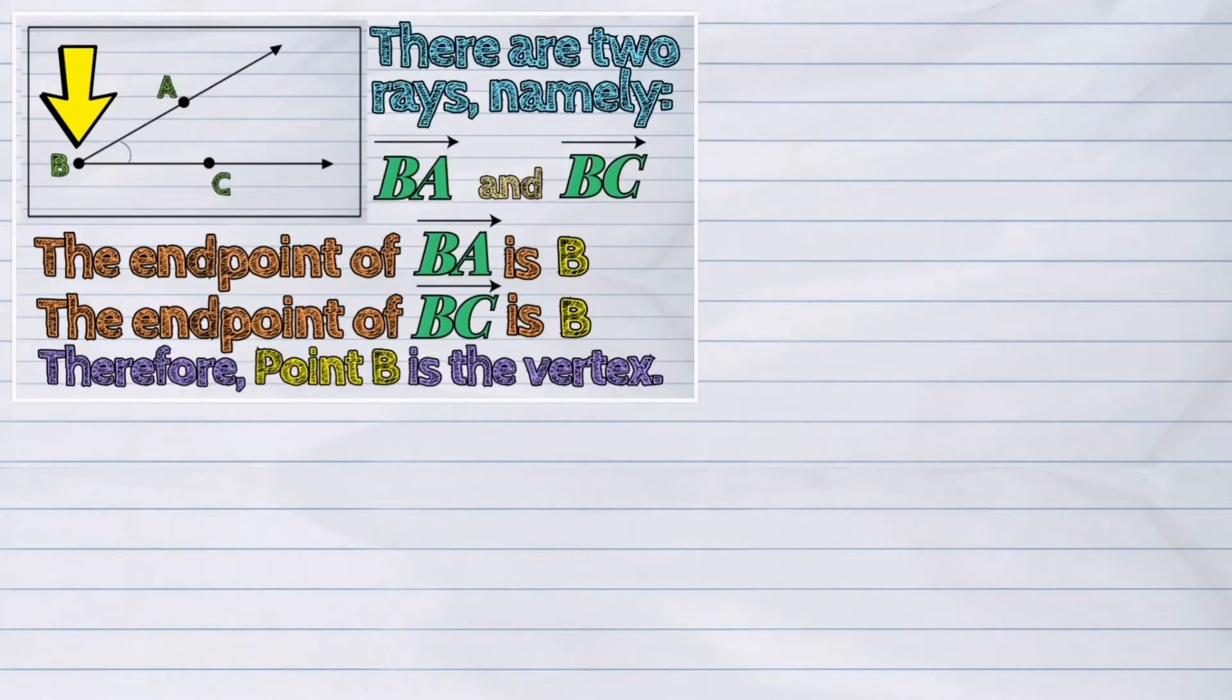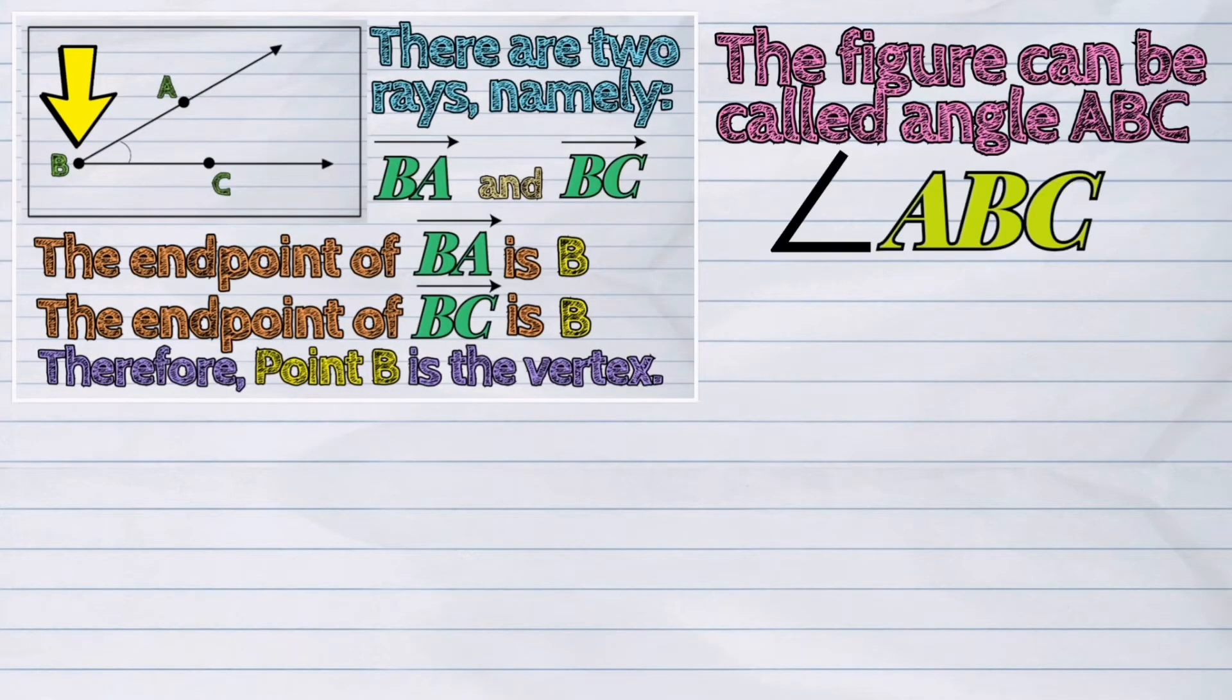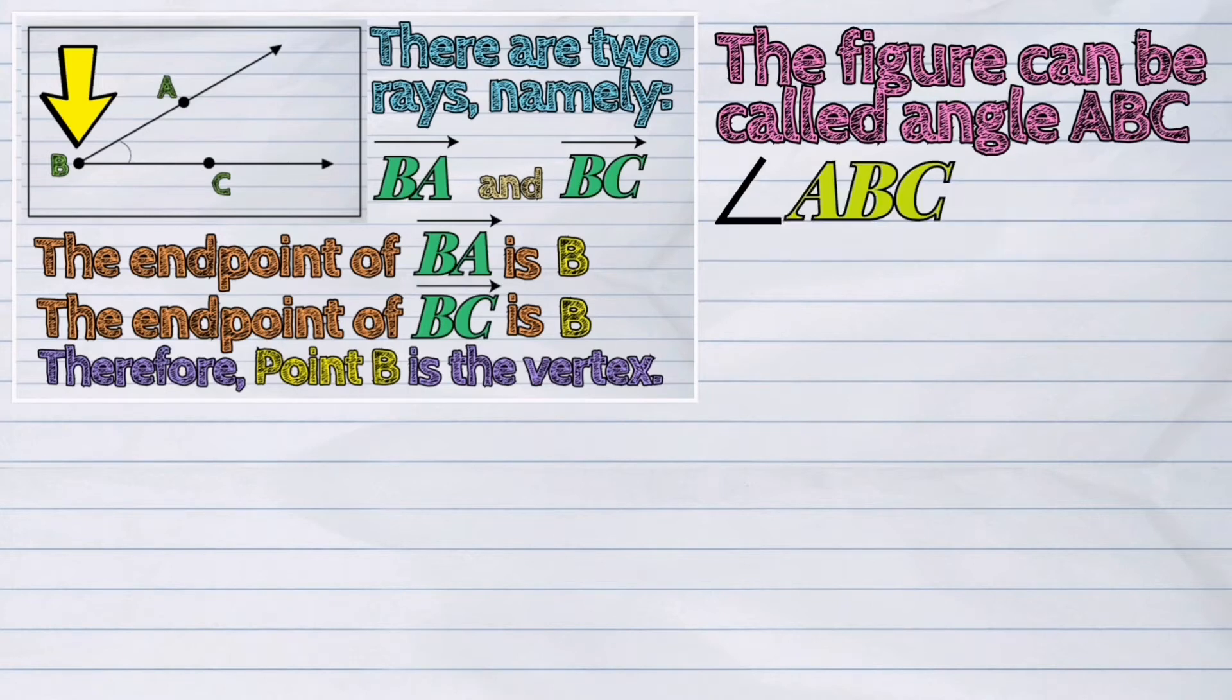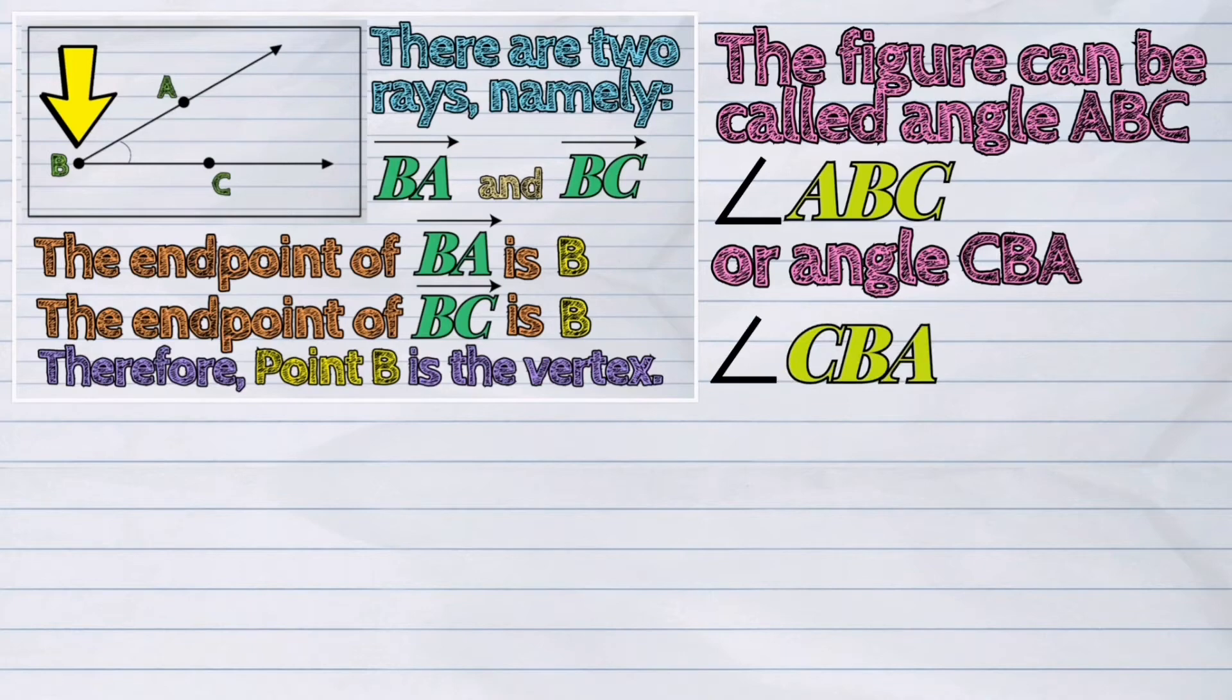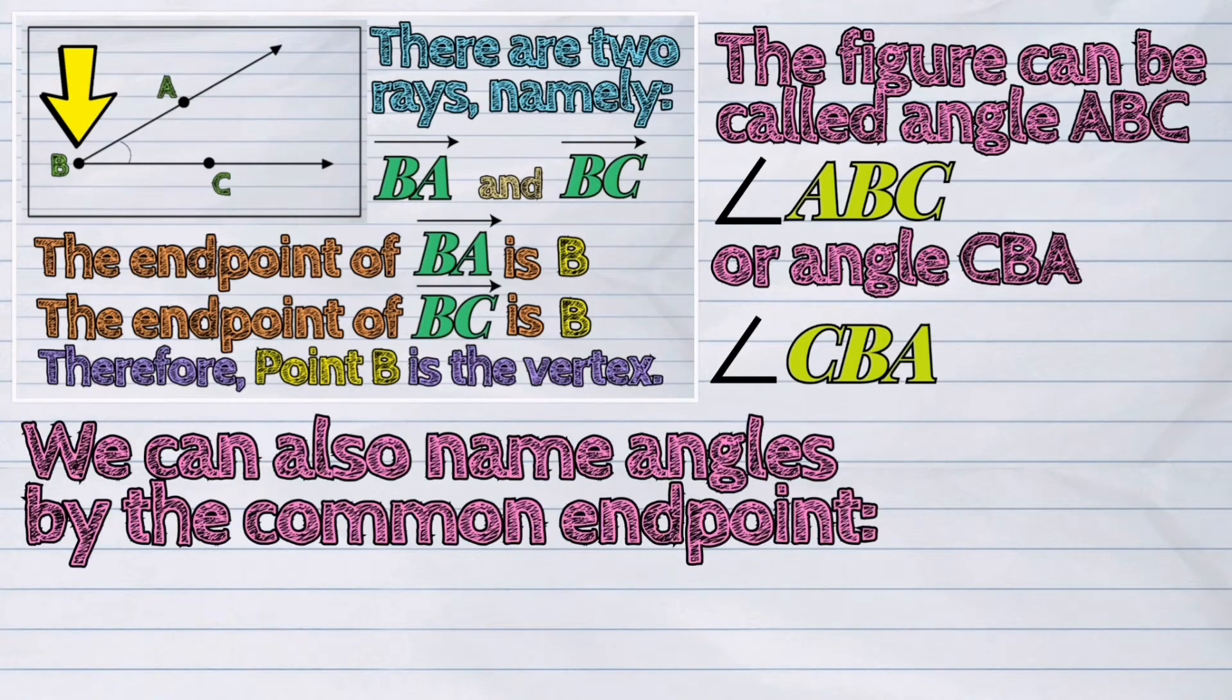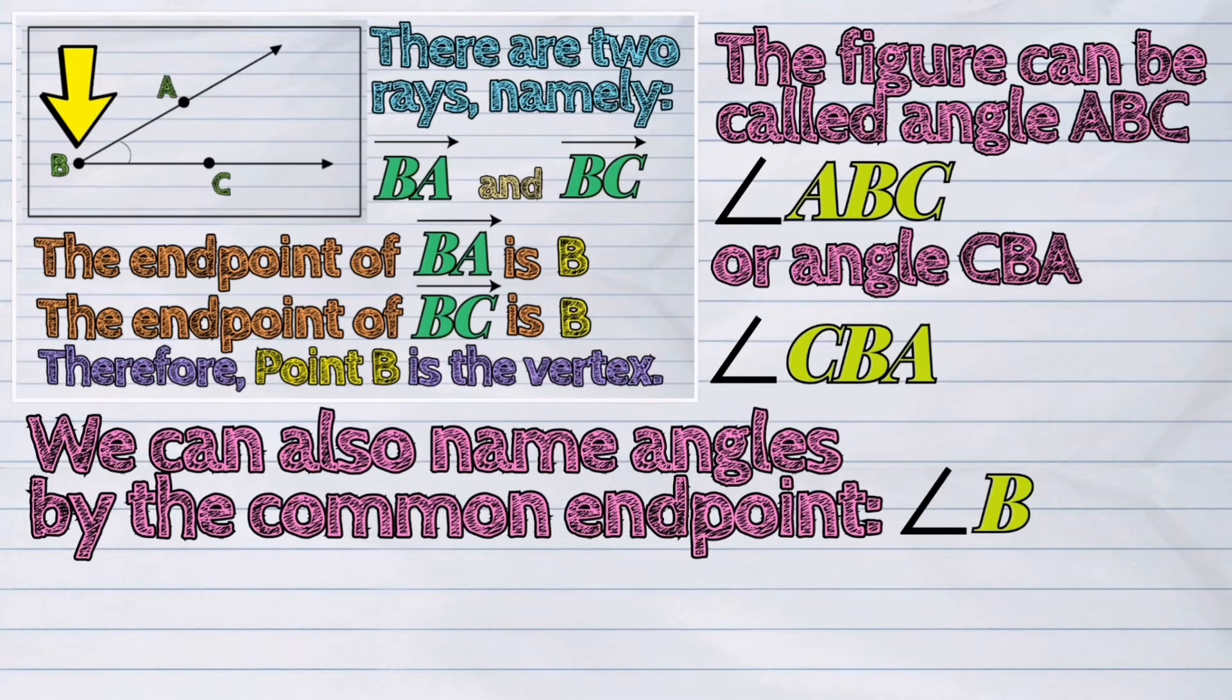The figure can be called angle ABC. Another name for this figure is angle CBA. We can also name angles by the common endpoint, which is angle B.